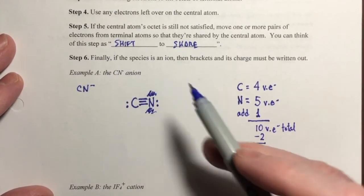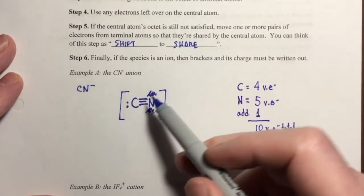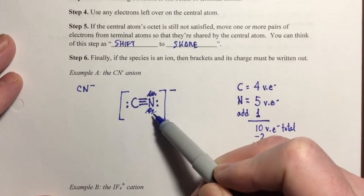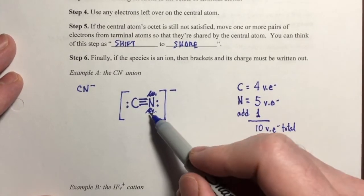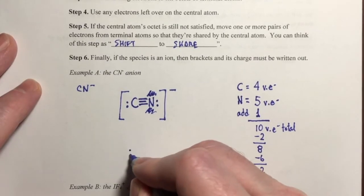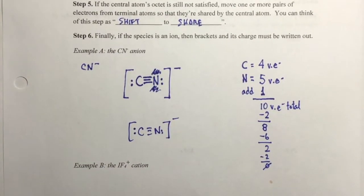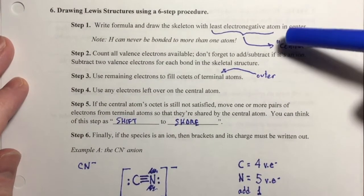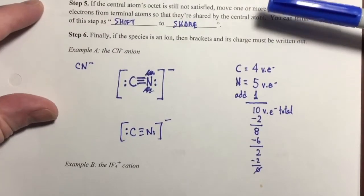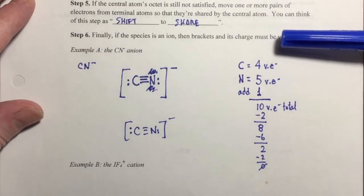Finally, step six: if the species is an ion, which this is, then brackets and its charge must be written out. I put brackets around the whole species to show it carries a charge. The two pairs of electrons that were shifted are no longer unshared electrons on nitrogen. There's the Lewis structure — written out neatly. Those are the six steps to draw a Lewis structure from the formula. Follow each step in turn; don't skip any. Steps five and six may not be needed depending on whether the central atom's octet is satisfied and whether you're dealing with an ion.